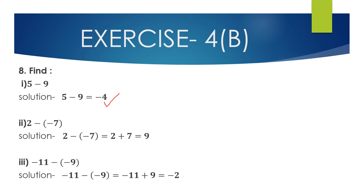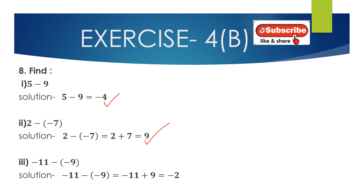Second: 2 − (−7). Minus of minus is plus, so 2 + 7 = 9. Third: (−11) − (−9). Minus of minus is plus, so −11 + 9. Opposite signs: subtract smaller (9) from larger (11): 11 − 9 = 2. The larger integer 11 has a negative sign, so we get −11 + 9 = −2.